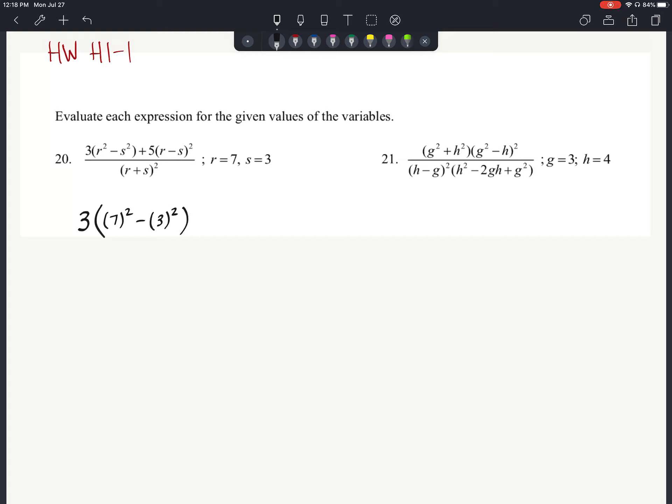16 minus 24 is negative 8. Negative 8 plus 9 is going to give us a 1. So on the bottom, we end up with just 1 times 1.